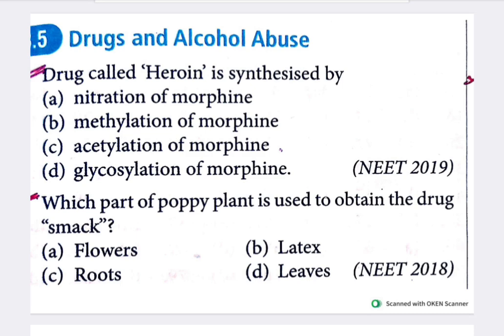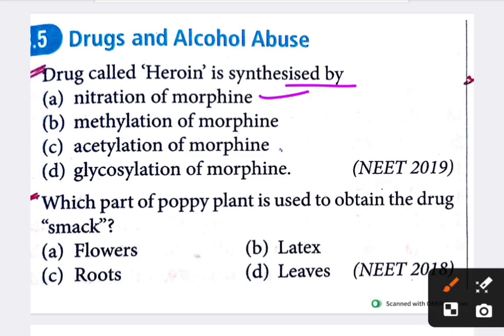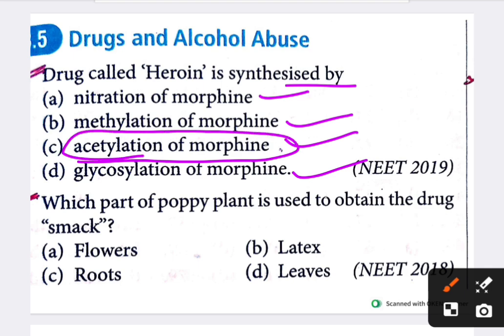Next question: the drug heroin is synthesized by which process applied to morphine? Options are nitration, methylation, acetylation, and glycosylation of morphine. The answer is acetylation of morphine. Also: which part of the poppy plant is used to obtain the drug? The answer is latex.